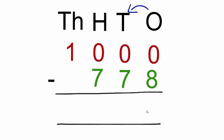Again the tens house also has 0. So go to the next house. The hundreds house also has 0. So go to the thousands house. There is 1 in the thousands place.